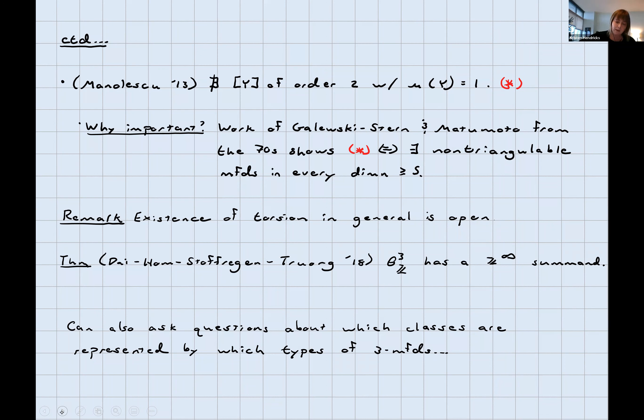In general, we don't know anything about the existence of torsion. We don't know whether there is any. That's still an open question. While I'm listing theorems about what subgroups and summands this group has, in 2018, Dai, Hom, Stoffregen, and Truong showed that theta 3Z has a Z infinity summand. I'm going to talk a little bit about their proof in a minute.